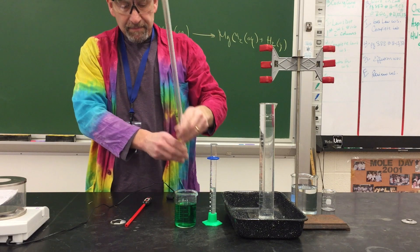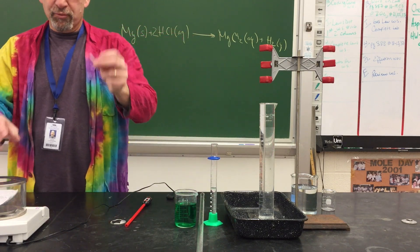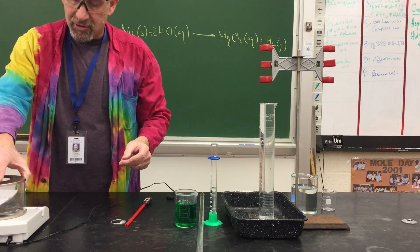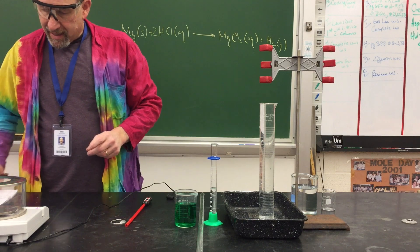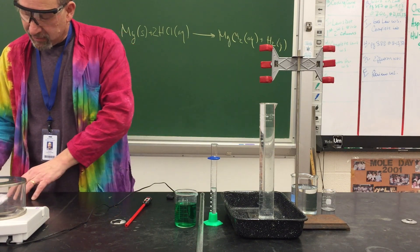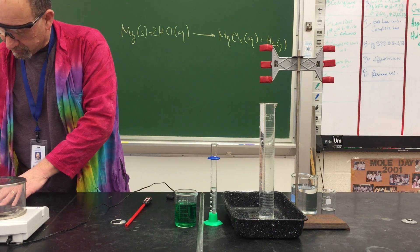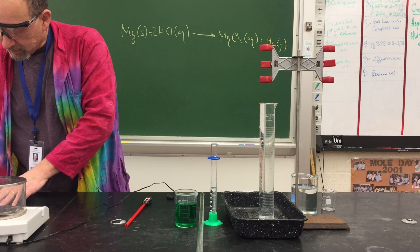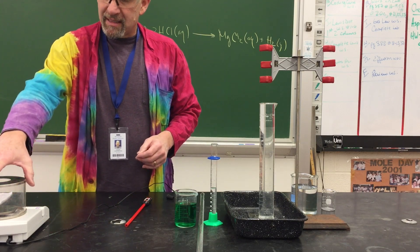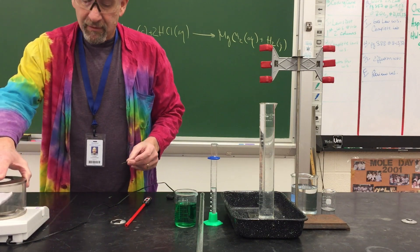To get started, I'm going to take a pre-cut strip of magnesium and measure its mass using a three-digit balance. The mass of this strip of magnesium — record this in your data table — is 0.039 grams. Even though we're only at two sig figs for the magnesium mass, we will use calculations to three sig figs for the rest of the experiment.